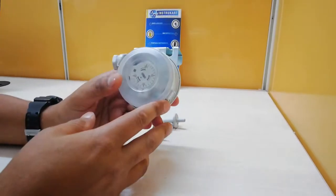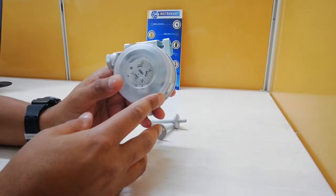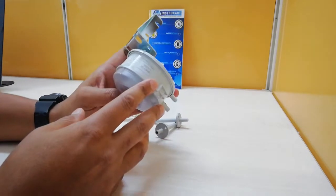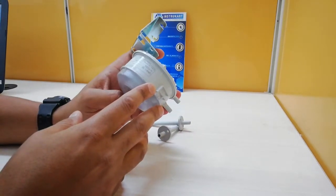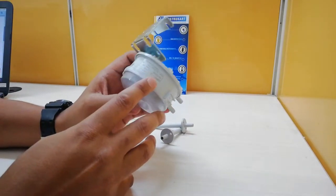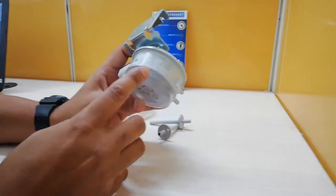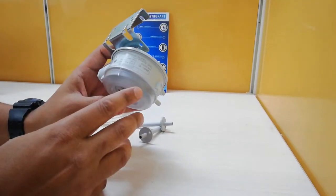We have a Siemens differential pressure switch over here. The model being QBM-8110. This ranges between 100 to 1000 Pascals.